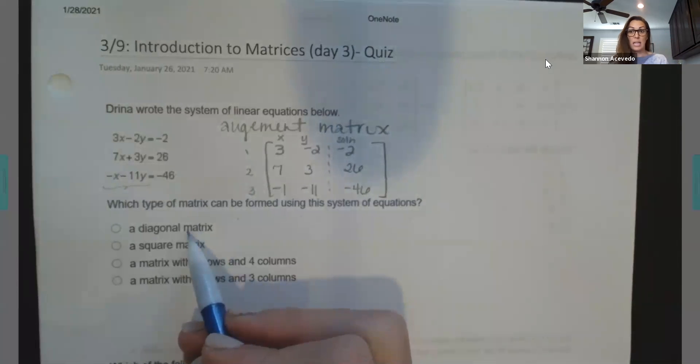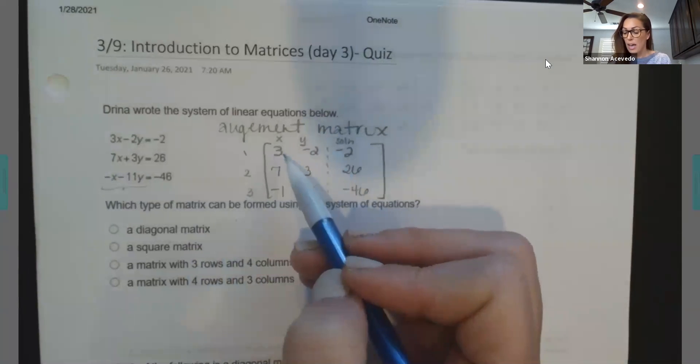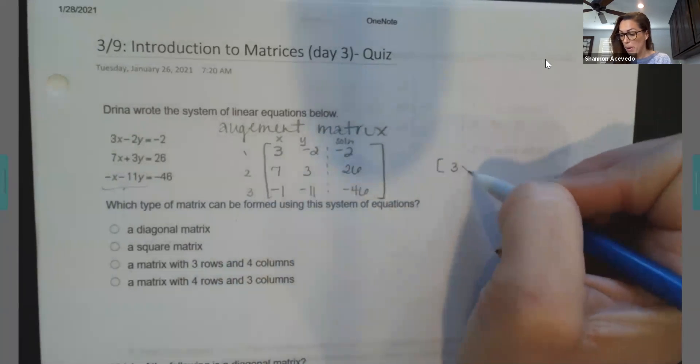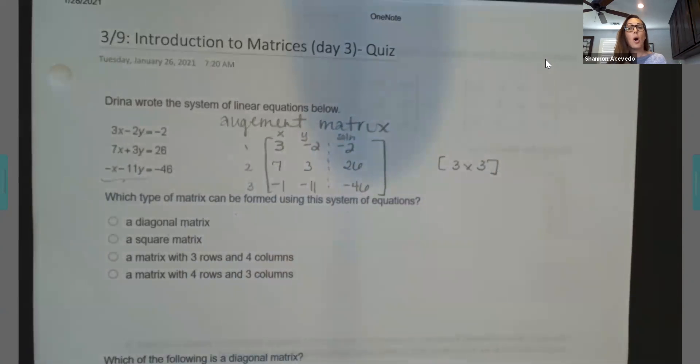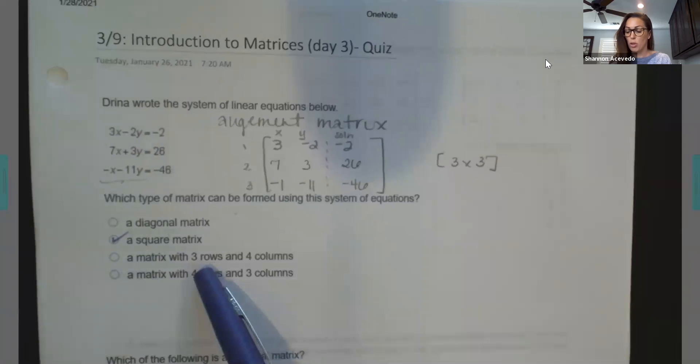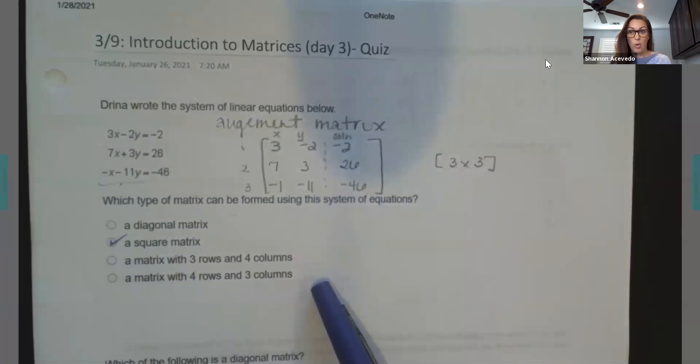So what kind of matrix do I have? I'm going to talk about diagonal matrix in the next one. I'm going to show you what that looks like. But do I have a square? When I look at the dimensions, I have three rows. Remember, it's always rows by, and I have one, two, three columns. So it is what we would call a three by three matrix, which is square. Same number of rows, same number of columns. It's going to give you a square. So it's only going to be that square matrix option.